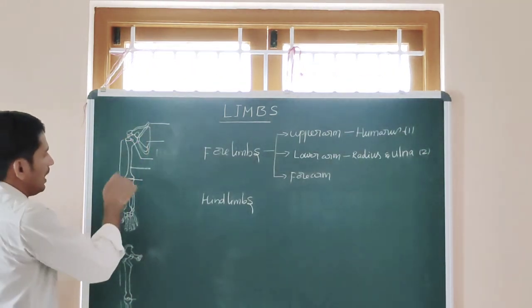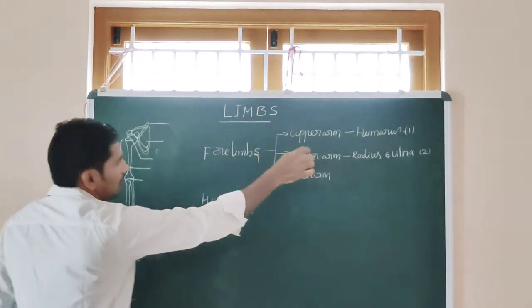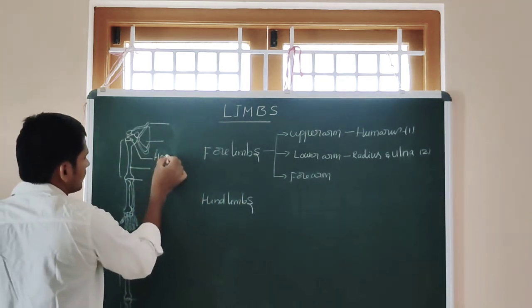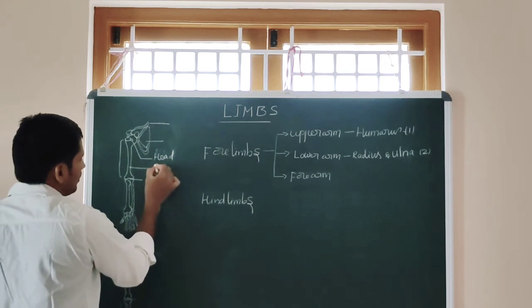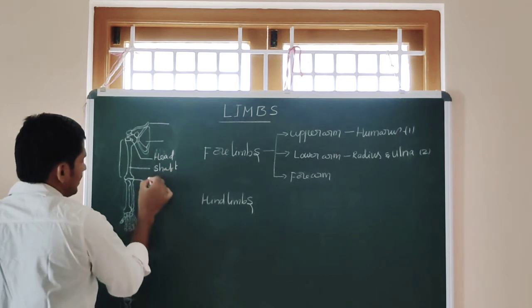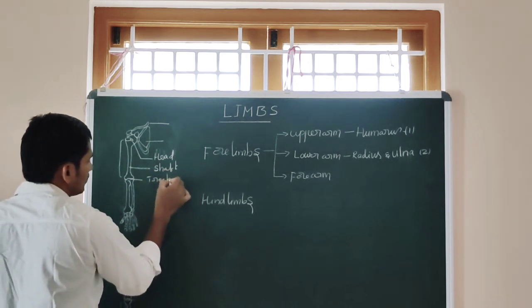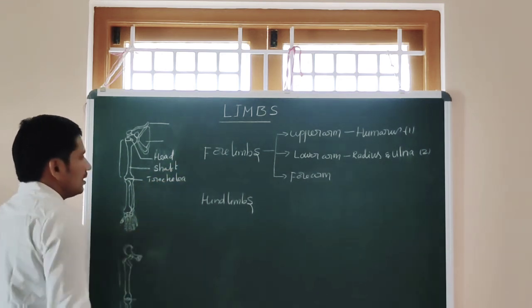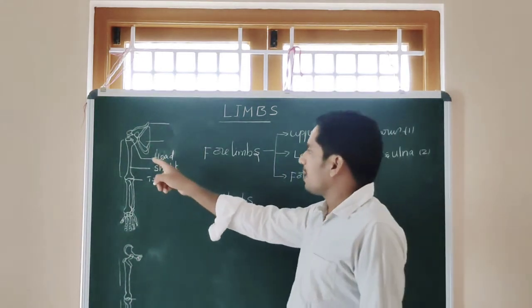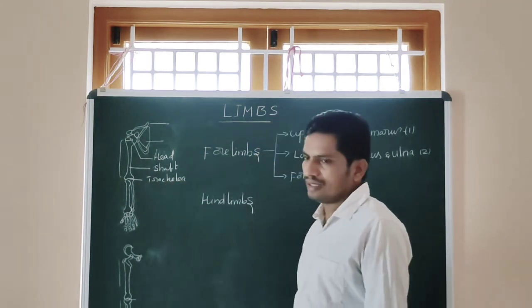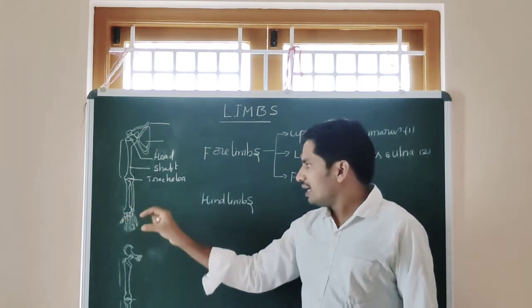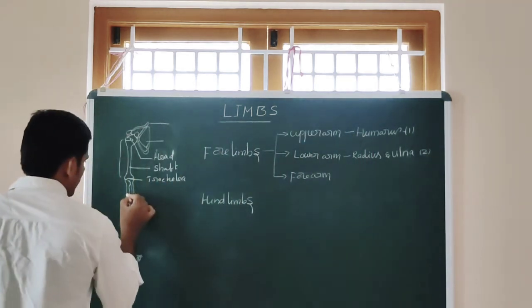Moreover, the upper arm humerus has three parts: the head, shaft, and lower end. Upper arm humerus has three parts which are the head, shaft, and lower end. Then comes the lower arm which has the radius.